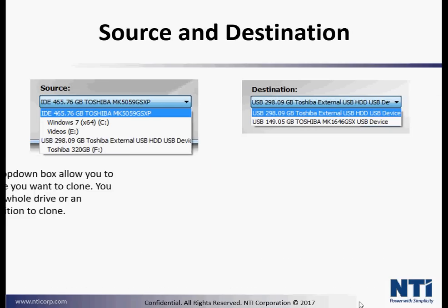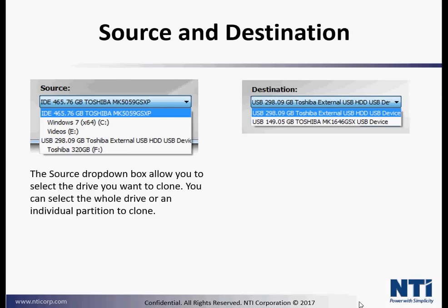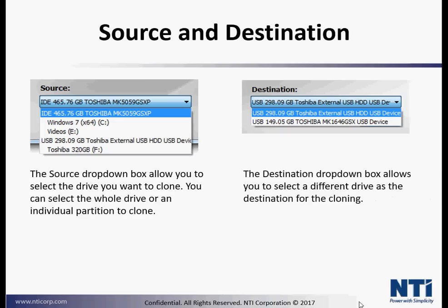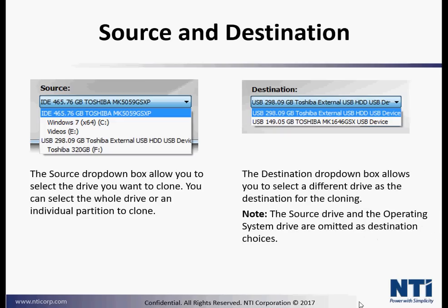Source and destination. The source drop-down box allows you to select the drive you want to clone. You can select the whole drive or an individual partition to clone, whereas the destination drop-down box allows you to select a different drive as the destination for cloning. Note that the source drive and the operating system drive are omitted as the destination choices.